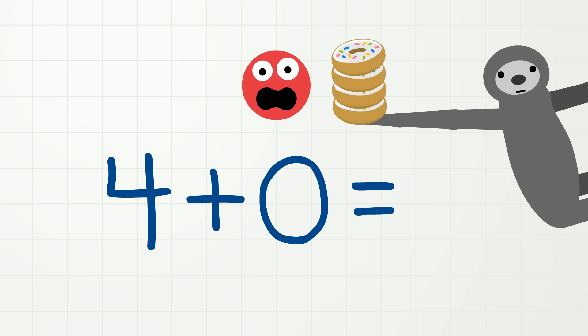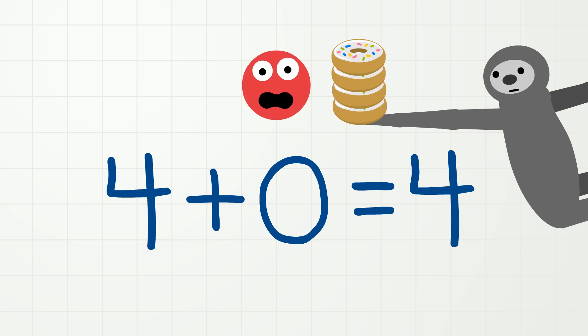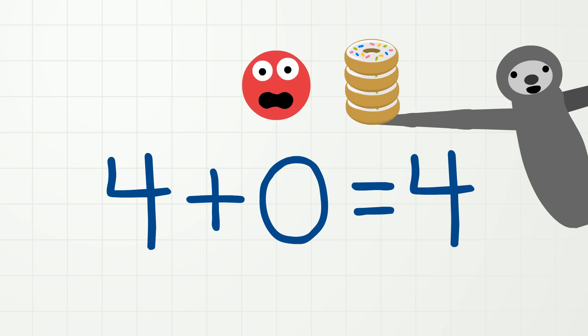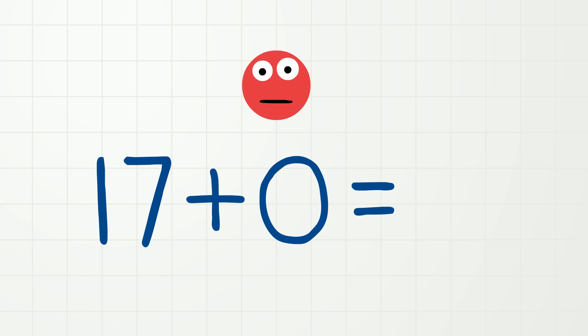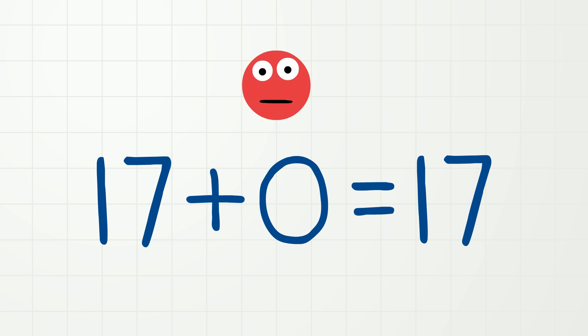And what if we had four donuts and we added zero? That's right, four plus zero equals four! And so even if you had a really, really high number of donuts, like 17, and added zero, you would still have 17 donuts! Yay! Okay, you did such a good job adding zero, it is now playtime! Okay, that's enough!